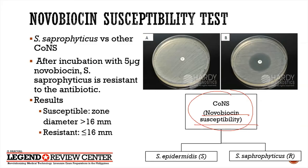In the novobiocin susceptibility test, Staph epidermidis is susceptible whereas Staph saprophyticus is resistant. For a susceptible result, the zone of inhibition should be greater than 16 millimeters.